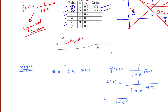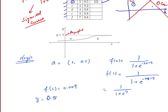So f(1) = 0.009. The y-coordinate of point A is 0.5. Since y = 0.5 is greater than f(1) = 0.009, the point is above the curve. If the point is above the curve, it is categorized as G1. This will be clear once we check B as well, which should be below the line.